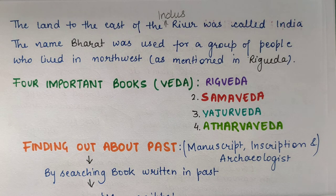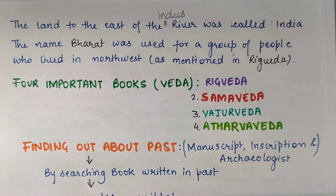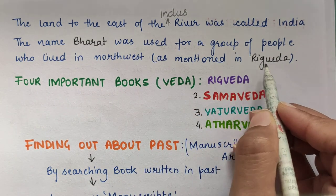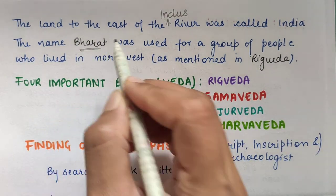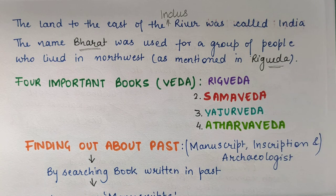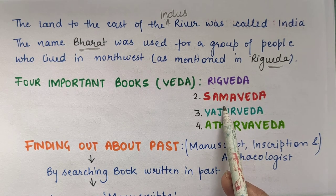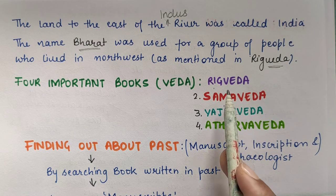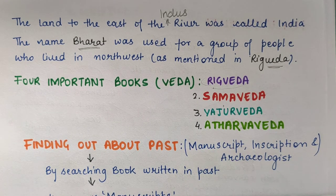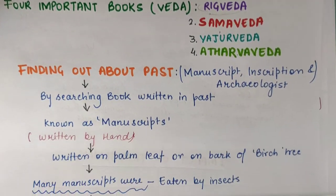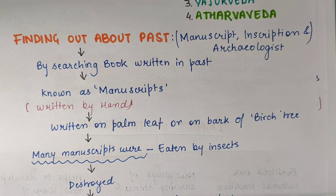The name 'Bharat' was used for a group of people who lived in the north-west, and with that we brought this name to the whole of India. Aur ye Bharat kahan likha hua tha? The first mention of Bharat is in the Rigveda. Rigveda ek book hai — hamare paas char Vedas hain: Rigveda, Samaveda, Yajurveda, and Atharvaveda. Aur sabse purana hai Rigveda — the oldest book we have.